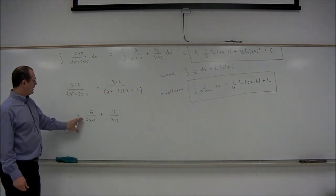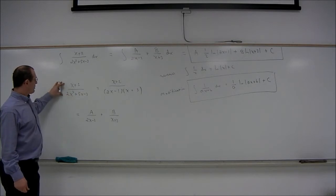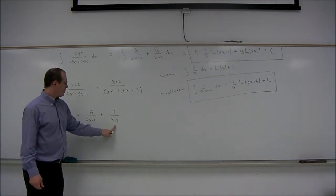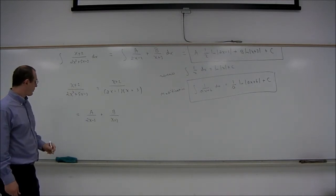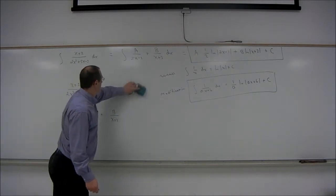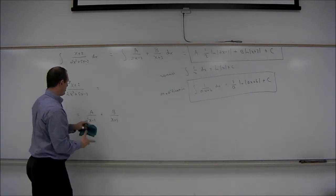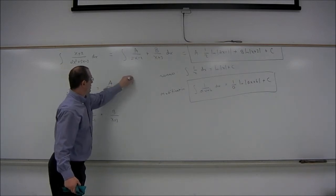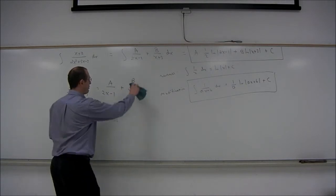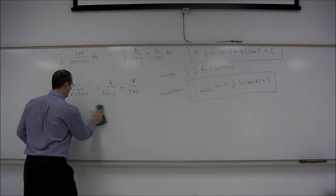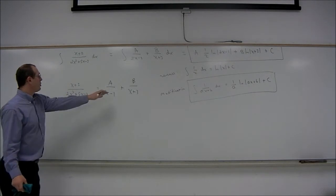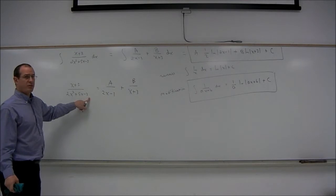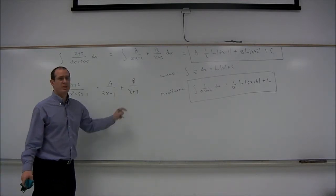So let's take a moment and look back at this equation here. x plus 2 over the denominator 2x squared plus 5x minus 3 is equal to the sum of these two fractions. So let me just move this up here. a over 2x minus 1 plus b over x plus 3.